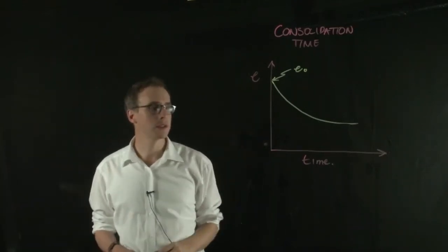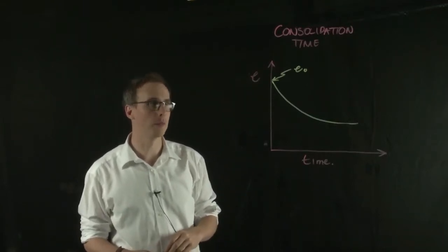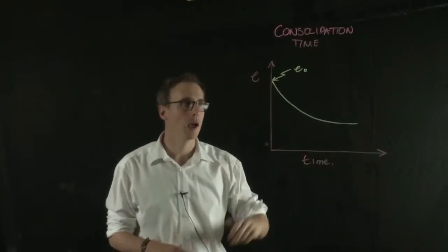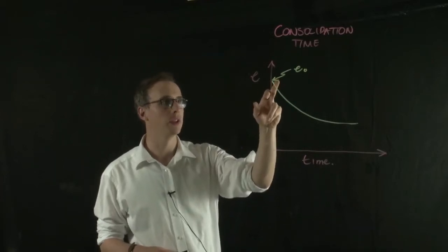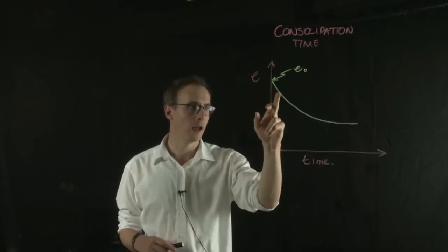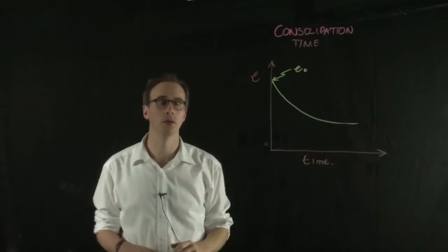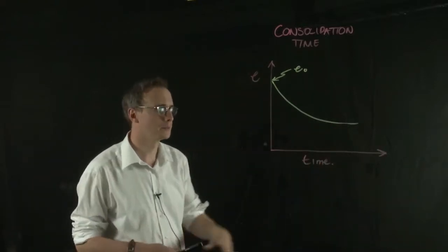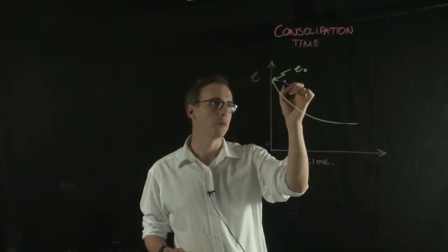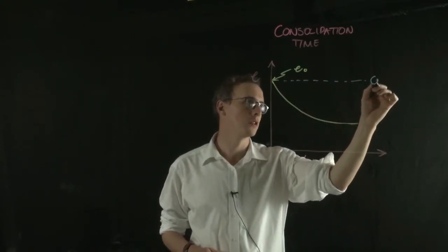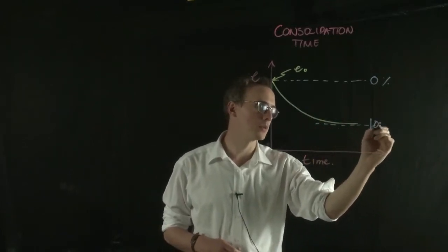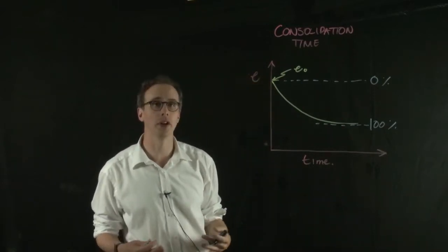If we return to this graph again from our one-dimensional odometer test, where we have void ratio on the y-axis and time on the x-axis, before we put any load on, the soil has an initial void ratio. Then when we stick a load on, the void ratio will decrease until it reaches a new level, a new level of equilibrium. At this point, we've got a soil that's 0% consolidated, and at this new level we describe as 100% consolidated. What we're defining is something called a degree of consolidation.